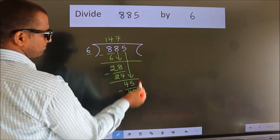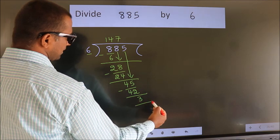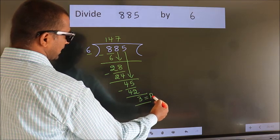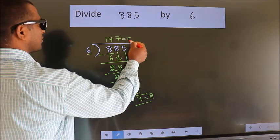No more numbers to bring it down. So, we stop here. This is our remainder. This is our quotient.